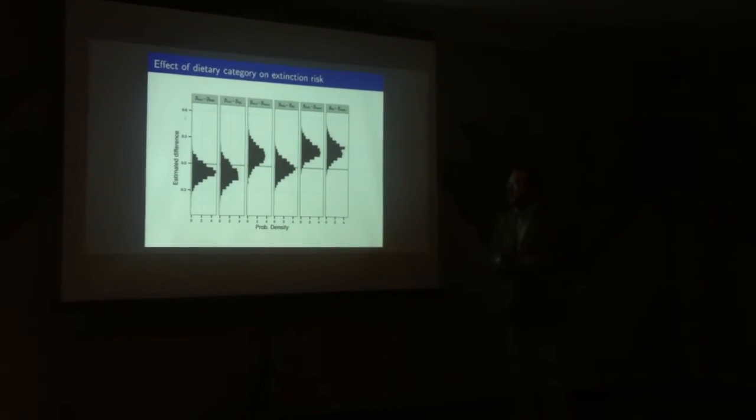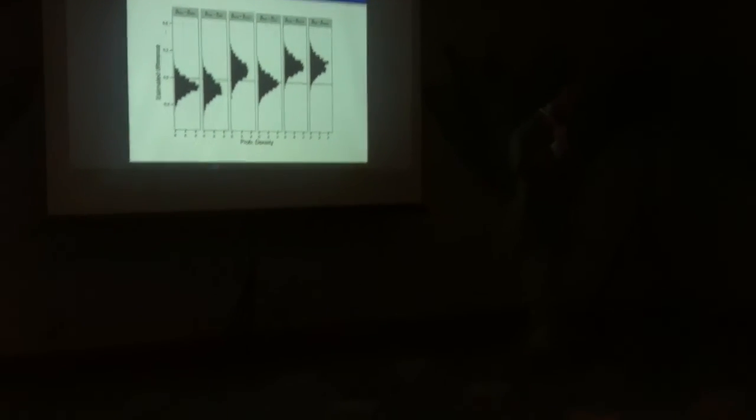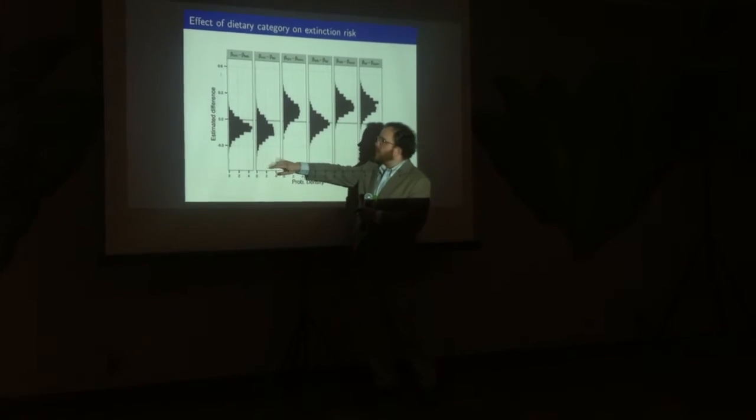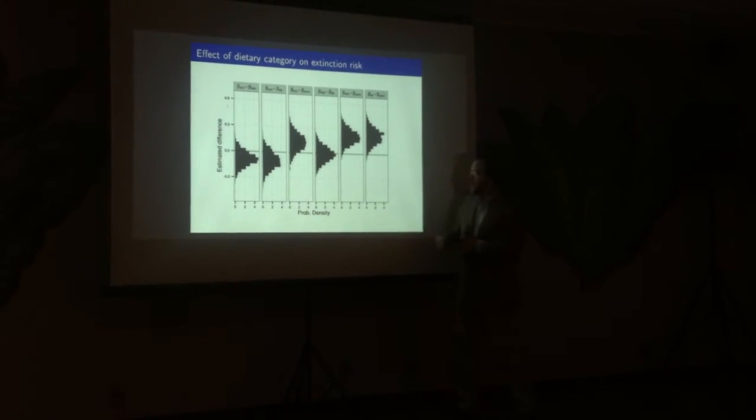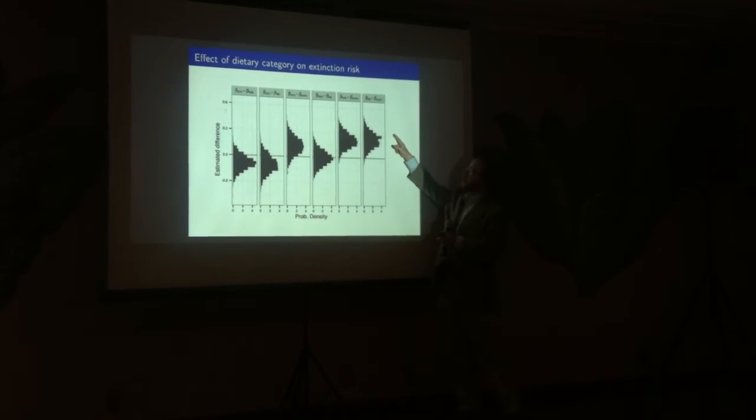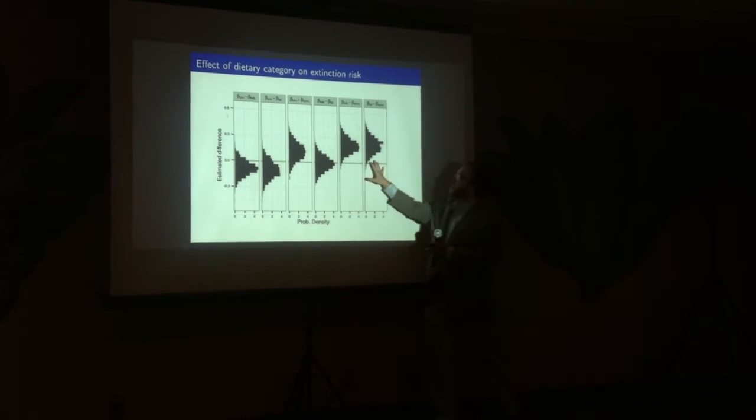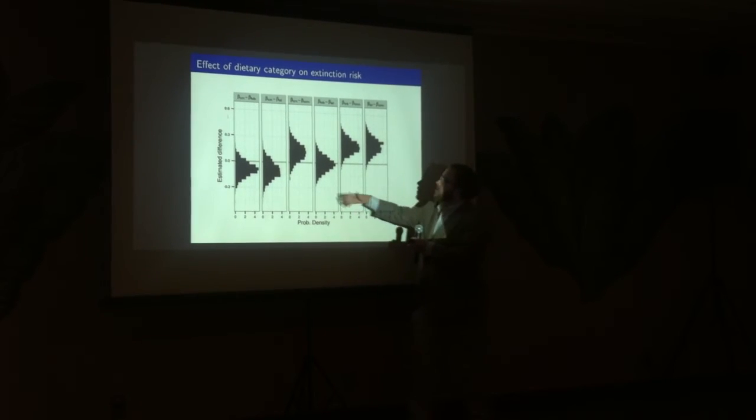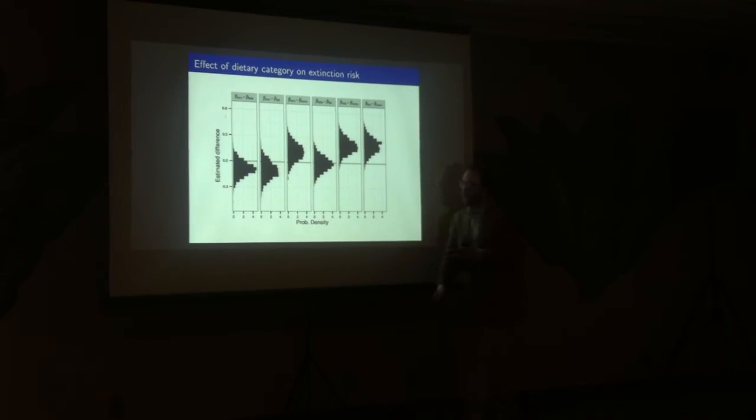We can move on to these ecological traits. Here's the pairwise differences in the effect of these dietary categories. We have carnivory versus herbivory, carnivory versus insectivory, and so on. The important here are omnivory, where values that are more positive indicate that the second has increased duration. So in this case, omnivory is expected to have a greater duration than either insectivory or herbivory. And then you can do the same thing with herbivory, insectivory, and so on.